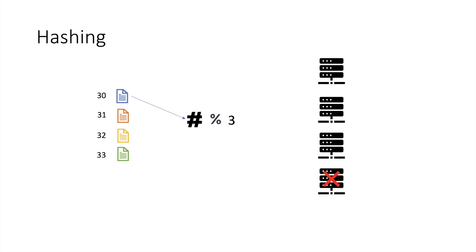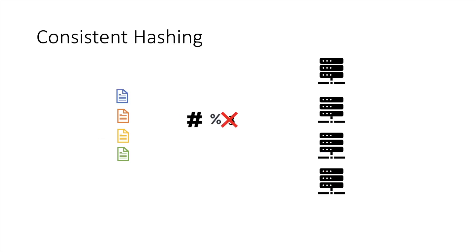Now let us see what happens to the same document. We pass the ID through the hash function which generates 41, but mod 3 now generates output 2. So hashing is asking us to send the blue document to server 2. This means any time you add a new server or one goes down, a whole lot of redistribution of data across servers has to be done. In distributed systems, servers keep going down or new servers are added for horizontal scaling, so redistributing data every time is a huge overhead. Consistent hashing solves this problem.